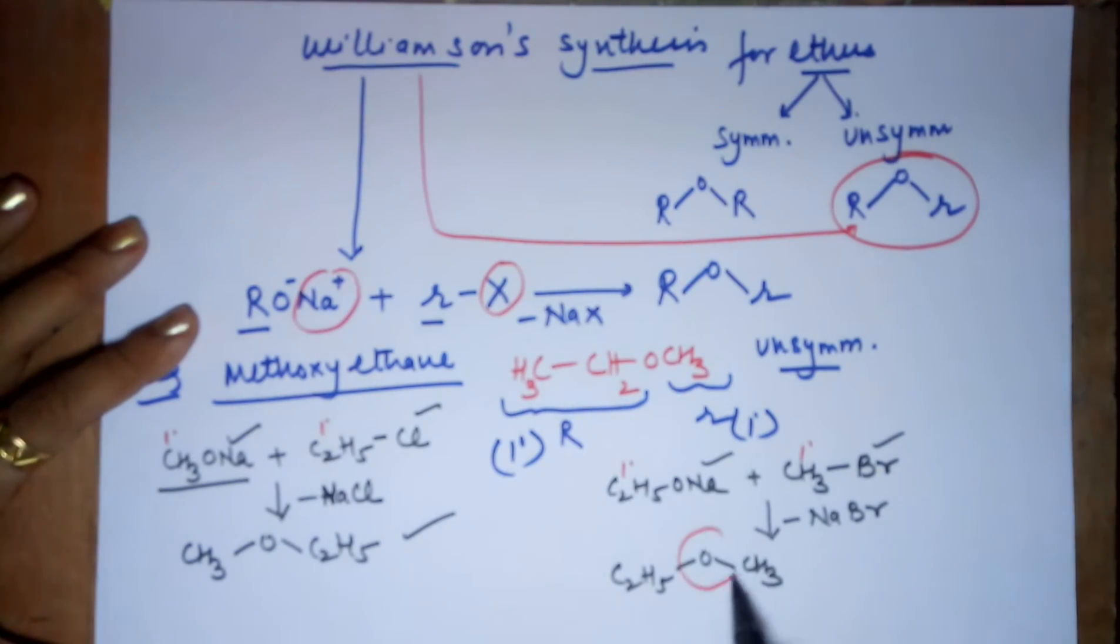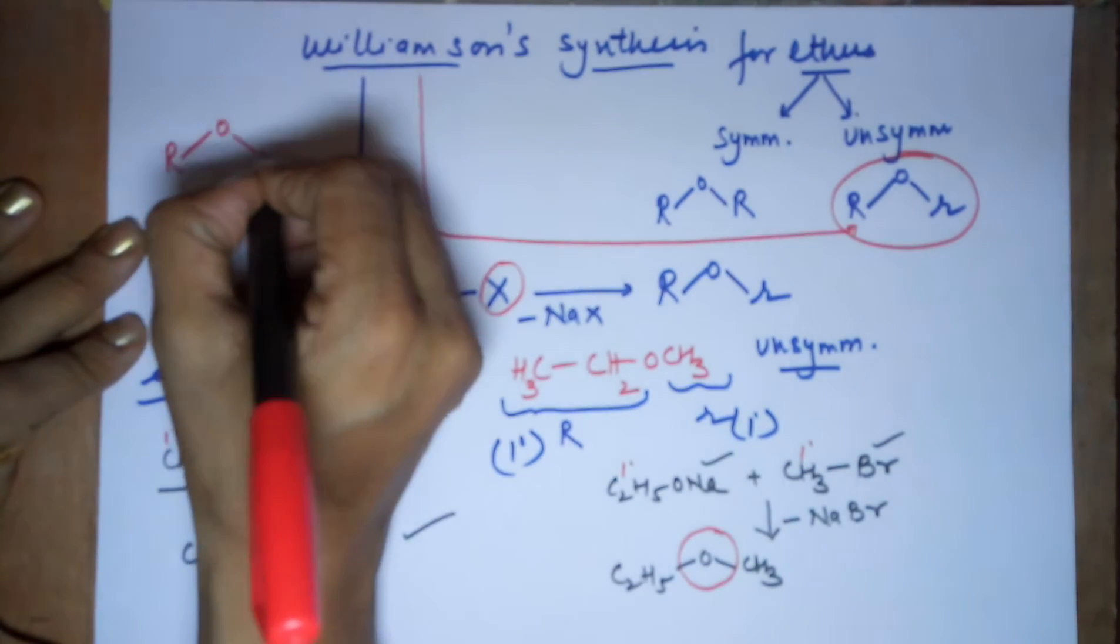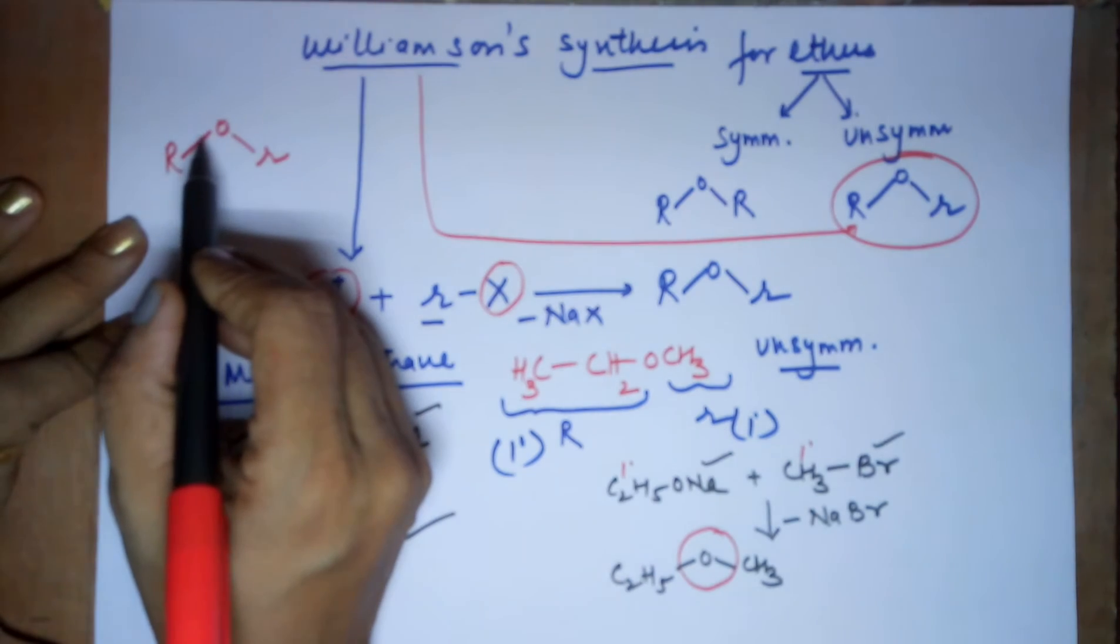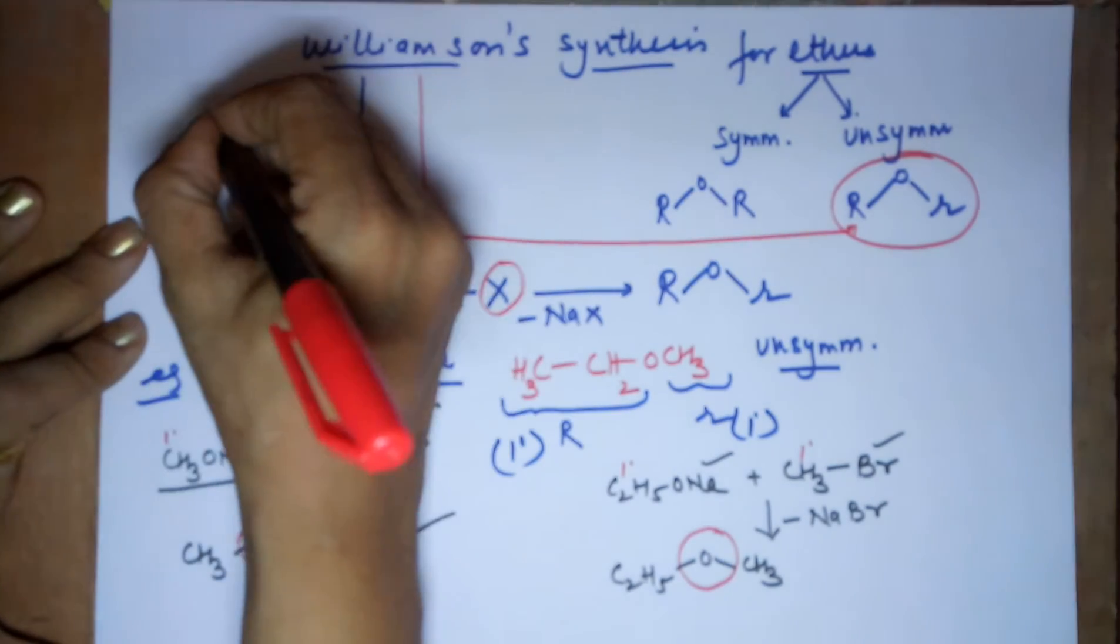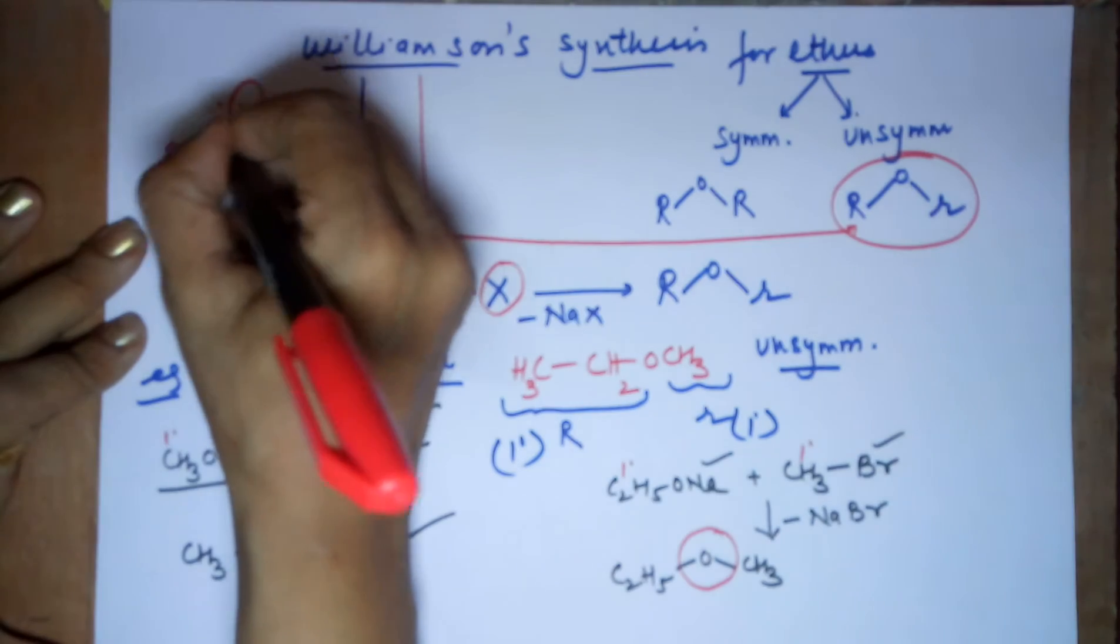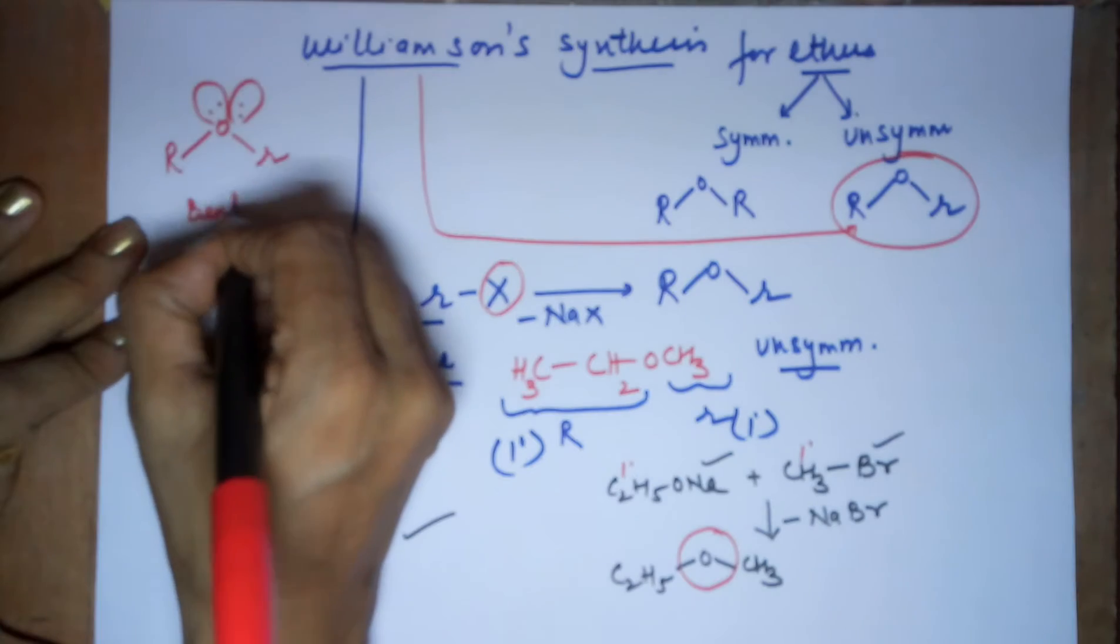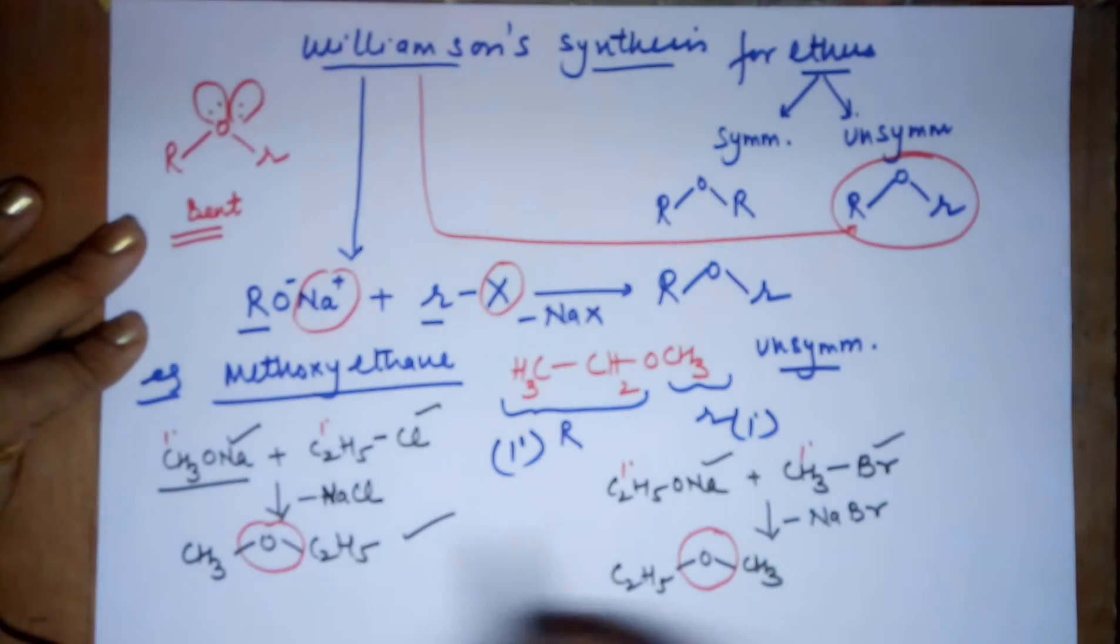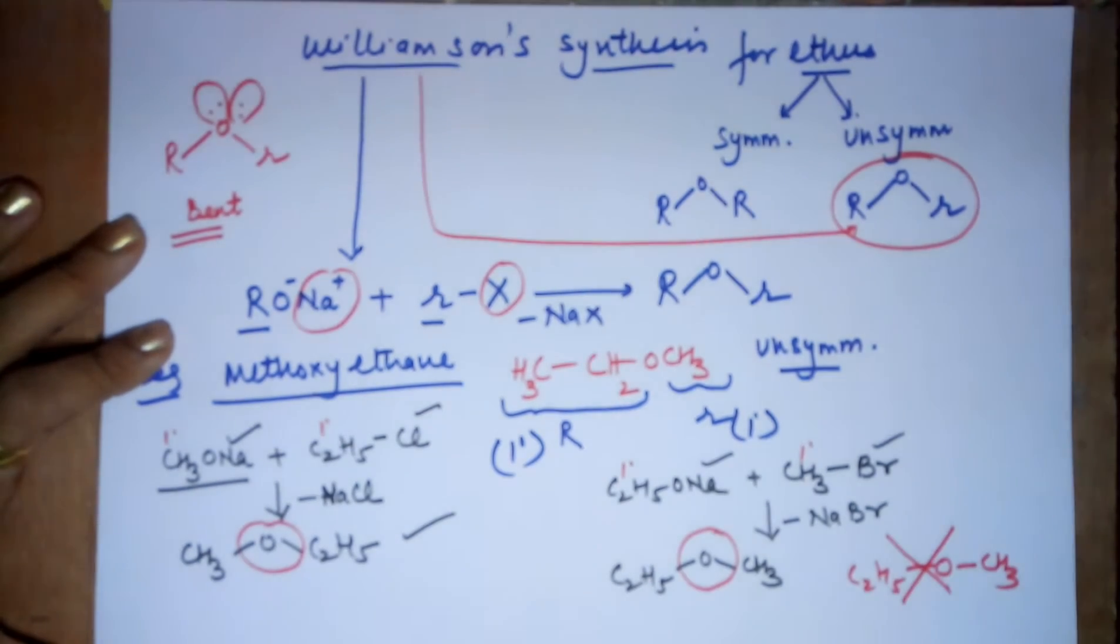Now, pay attention. I have deliberately written O in a bent geometry. For which, I hope you very well know, your ether's oxygen. Oxygen has an atomic number of 8. The outermost shell has 6 electrons. Out of which you have used 1 here, 1 here. You are still left with 4 more electrons. It is because of these 2 lone pairs that you have a bent geometry. Fine. So I am always referring it like this. Not in a straight line like this. That is not the correct way to write an ether.